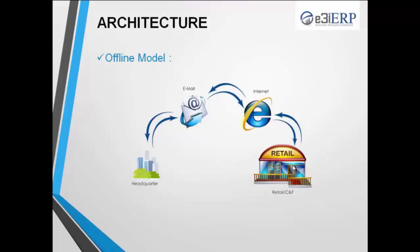The last module is the offline module, which can work without full-time internet — it can work through a data card or dongle at the end of the day. This offline module is beneficial for firms that follow a day-end process. The branch composes an email of the data backup to the head office, which reaches head office as soon as internet is available, and the head office can then view the MIS reports. This process requires minimal internet, not a full-time connection.